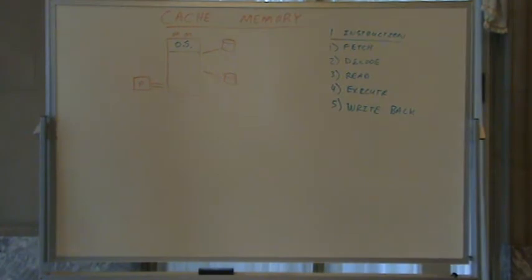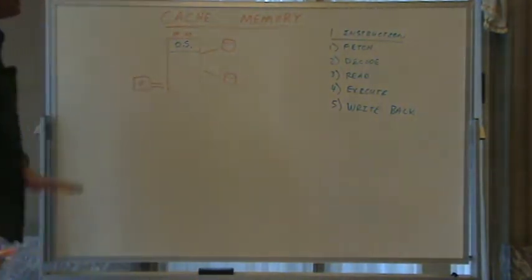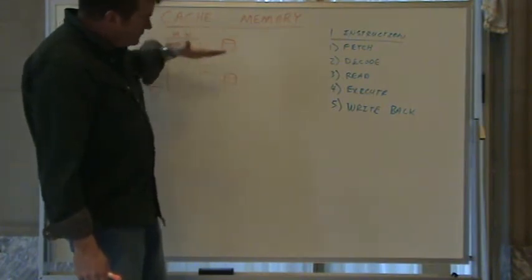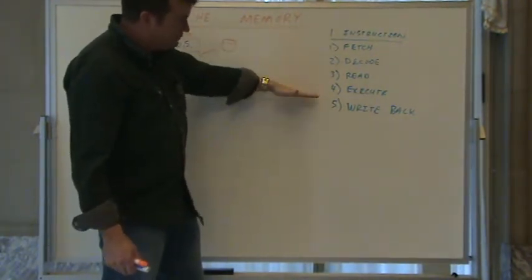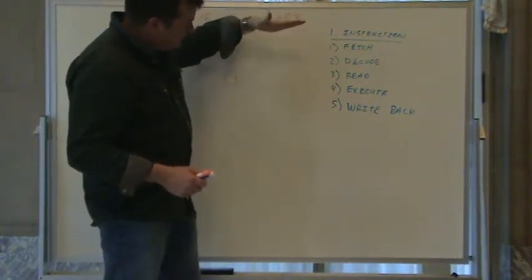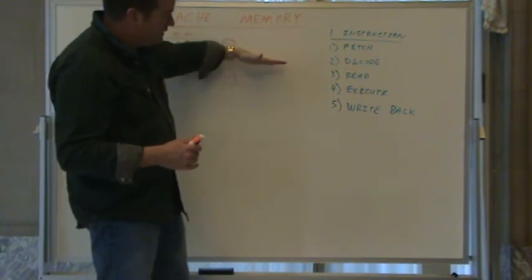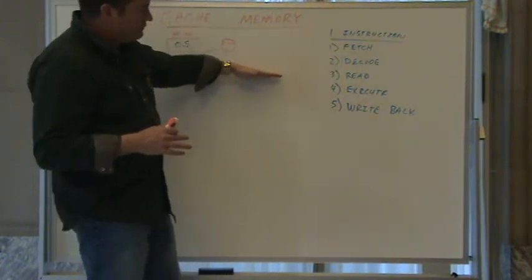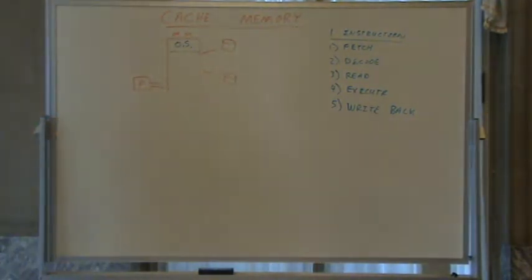Once an instruction is done, we fetch the next one and run that. We have a clock that constantly powers one line for each step and then goes back to the beginning — fetch, decode, read, execute, write — thoughtlessly, just keeps doing this. Each step gets electricity applied for a certain amount of time before the clock moves to the next step.